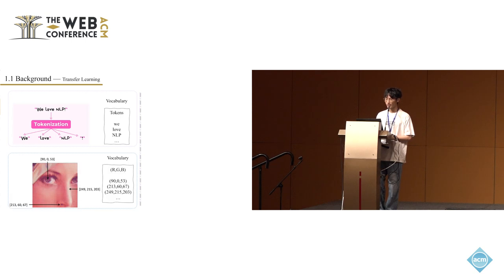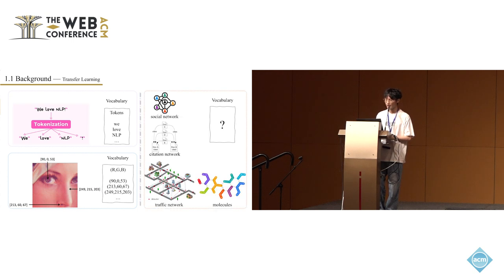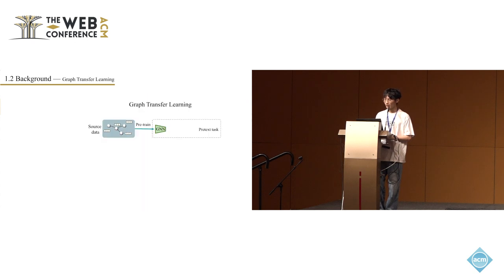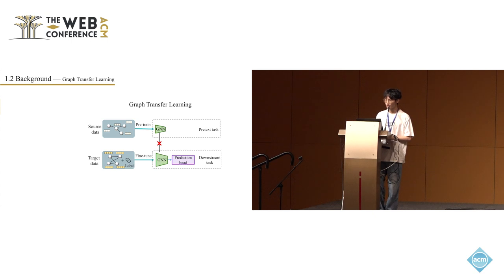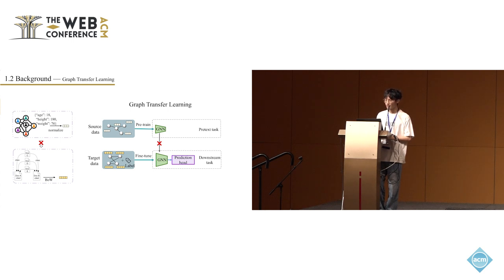However, in the graph domain, graphs represent more complex relationships, making it hard to create a unified graph vocabulary. This makes transferring pre-trained graph models from source to target data difficult, because graphs can be very different from one another. For example, a graph from a social network might show attributes like age or height, but graphs showing connections between research papers might just have a list of important words. Since these graphs represent information differently, it's hard to get a general model trained on one type to do well on another.